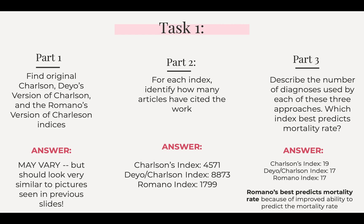For part three, we learned from the previous slides that Charlson's has 19 diagnoses while Deyo's and Romano's each have 17. Based on the information covered previously, I best inferred that Romano's best predicts mortality rate because it is the most recent index interpreted from Charlson's, allowing us to receive a lot more accurate information about mortality rate.